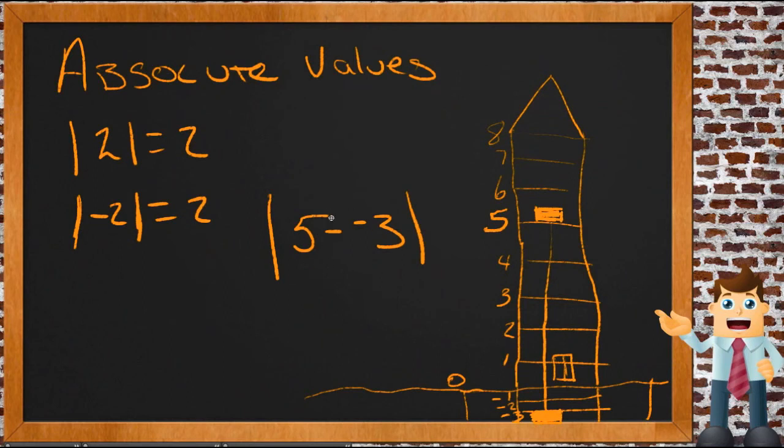So the difference between five and negative three, we don't care whether it comes out positive or negative. We don't care. We don't want to know about this distance whether we're going down or up. It doesn't matter to us. What matters to us is how many floors there actually are in between.